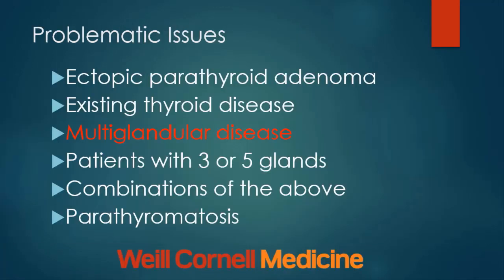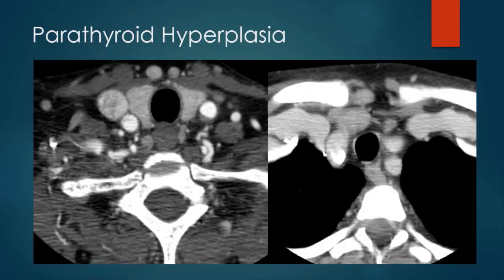The next problematic issue: multi-glandular disease. Parathyroid hyperplasia may be increasing in incidence, and we need to continue evaluating for multiple gland abnormalities. This patient undergoing 4D CT demonstrates four enlarged glands — a relatively classic case of parathyroid hyperplasia.